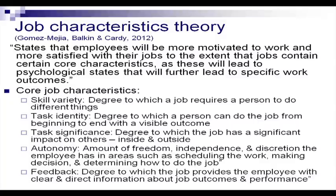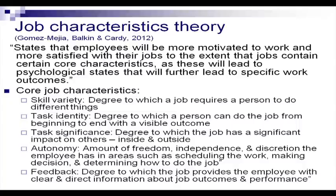The first core characteristic is skill variety. Some of us get motivated by a variety of skills we use in our work environment — using analytical skills one day, persuasive skills another, physical ability another, or patience when correcting student papers, which also tests honesty, integrity and fairness. The second core characteristic is task identity — the degree to which a person can do the job from beginning to end with a visible outcome. Many of us do not feel comfortable when we cannot see the results of what we have done.